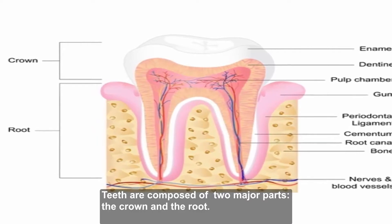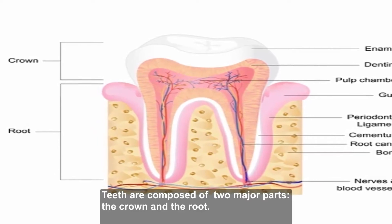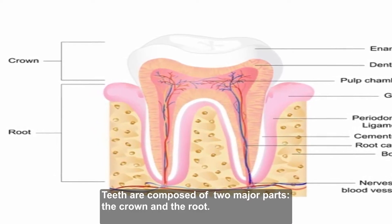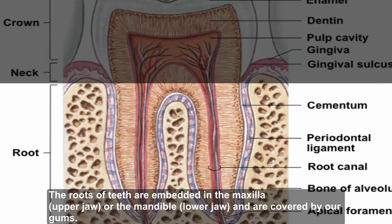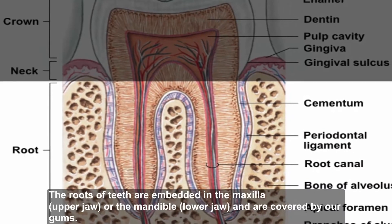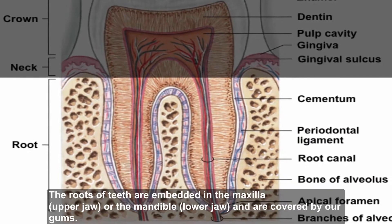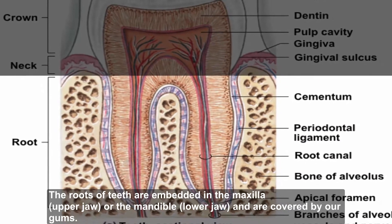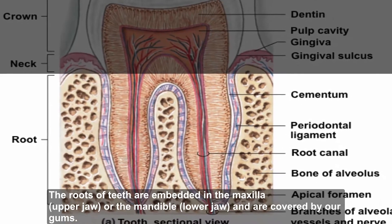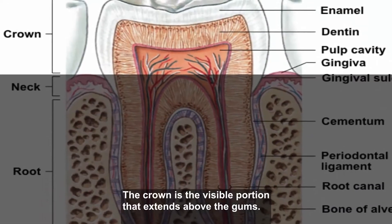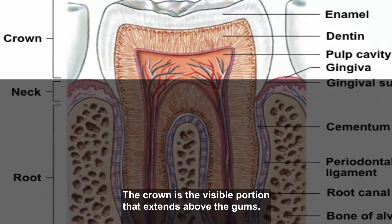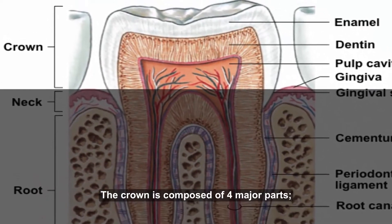First of all, teeth are composed of two major parts: the crown and the root. The roots of teeth are embedded in the maxilla and are covered by our gums. The crown is the visible portion that extends above the gums.